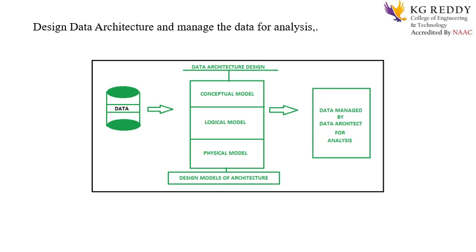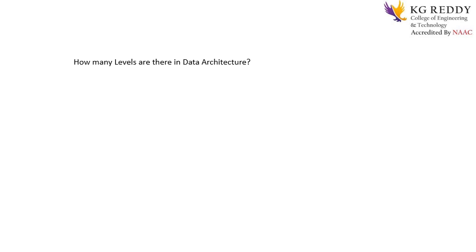I hope it is clear for everyone. Now I have a small question for you: how many levels are there in data architecture? Please take one minute to think. The answer is: there are three levels of data architecture — physical level, logical level, and conceptual level. I hope you have understood the first topic.